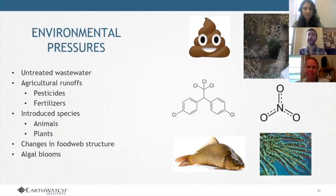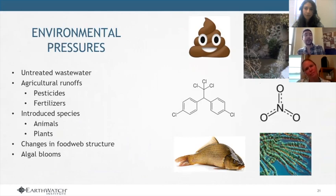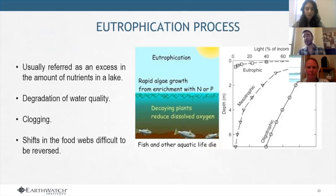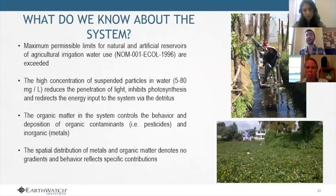We have identified many environmental pressures. There is treated wastewater because houses are invading the Chinampas. There are also agricultural run-offs with pesticides and fertilizers. We also have introduced species such as tilapia and carp, and introduced plant species as well. These have changed the whole structure of the system and caused algal blooms. The system is eutrophicated — there is an excess of nutrients that degrades water quality.